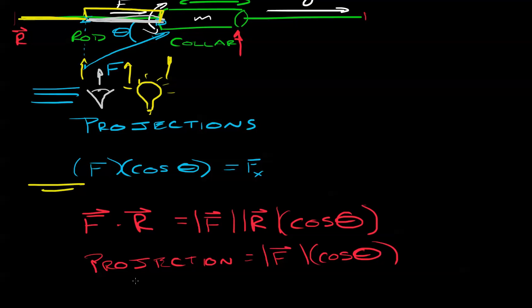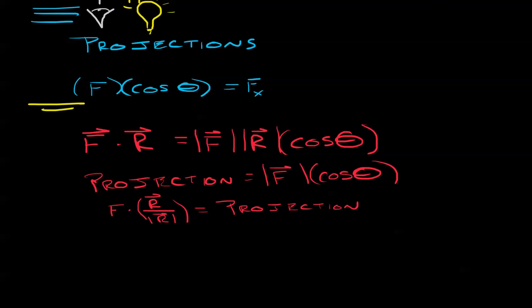We're going to try and see if we can get the magnitude of F times cosine theta by itself and see what ends up on the other side. Well, this is what we're looking for. Let's divide both sides by the magnitude of R. If we do that, we have F dot R over magnitude of R equals, and we're just going to come right out and say it, equals the projection.